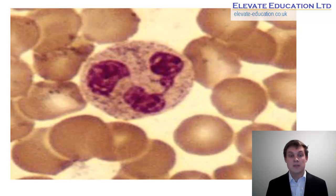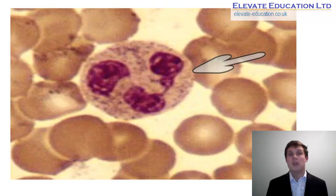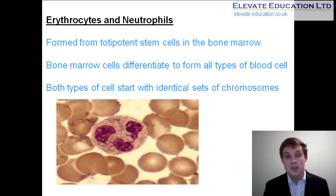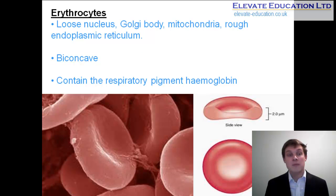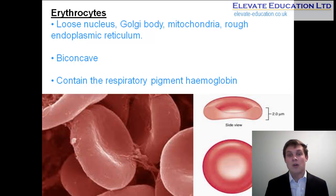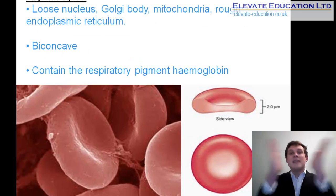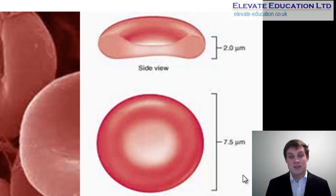If you look at the blood smear shown on the bottom of the slide, you can see clear differences between the smaller erythrocytes — the red blood cells — and the larger neutrophils, the white blood cells shown in the center of the picture. The erythrocyte is a unique and highly specialized cell. As it develops from a totipotent stem cell, it loses its nucleus, Golgi body, mitochondria, and rough endoplasmic reticulum, so these cells contain no DNA. Because the cell has lost these organelles, the membrane becomes indented on both sides, giving it a biconcave shape — like a tree-born mint as seen in the side view.